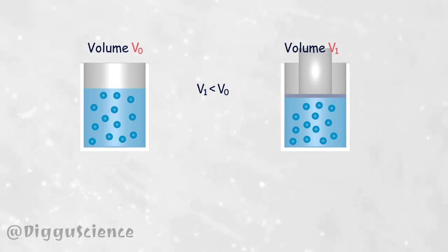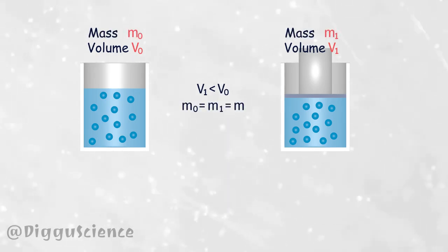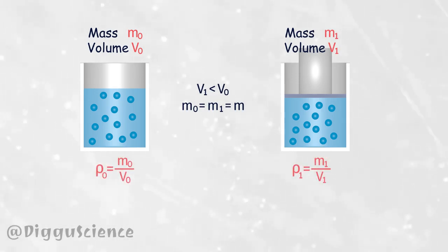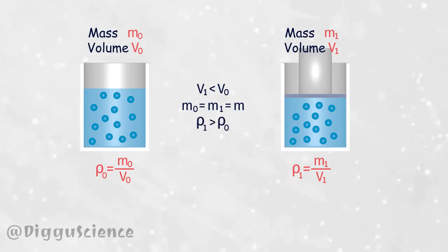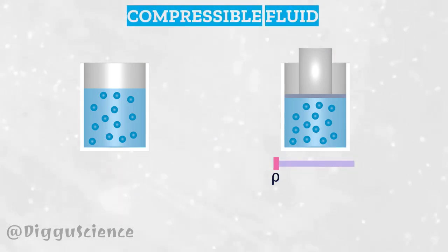Because the number of fluid particles is fixed, the masses of the particles are the same — M0 equals M1 equals M. Density is the result of dividing the mass of a fluid by its volume. When there is external pressure, the density of the fluid will increase. This is what is called a compressible fluid.